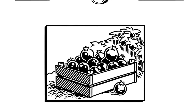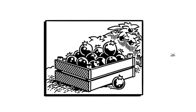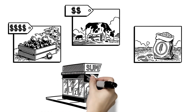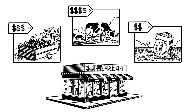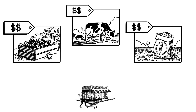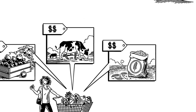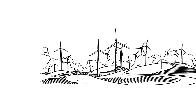Food and beverage companies use derivatives to manage the risk of price fluctuations in their ingredients. This helps ensure that the supply and price of a shopper's favorite foods are more stable.